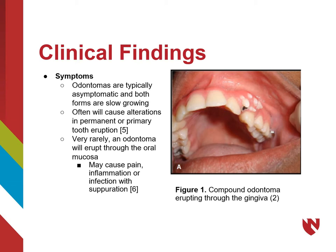Typically, odontomas are asymptomatic, and both the compound and complex forms are slow growing. The presence of an odontoma will often cause alterations in the eruption of the primary or permanent dentition. While very uncommon, it is possible for an odontoma to erupt through the oral mucosa, as illustrated in this photo. When this does occur, it may be associated with pain, inflammation, or infection with suppuration.